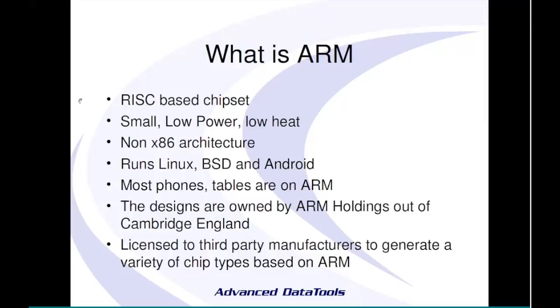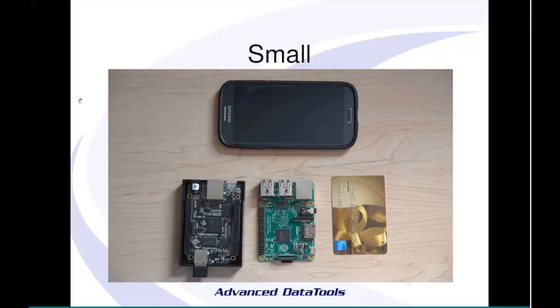These devices are very small. At the bottom of the slide there are two devices shown alongside a credit card for size comparison — those are full computers. A smartphone is shown for a little more contrast. Those small systems are running ARM chips — a full computer with everything your desktop has, just a bit smaller, not quite as fast, and using way less power.